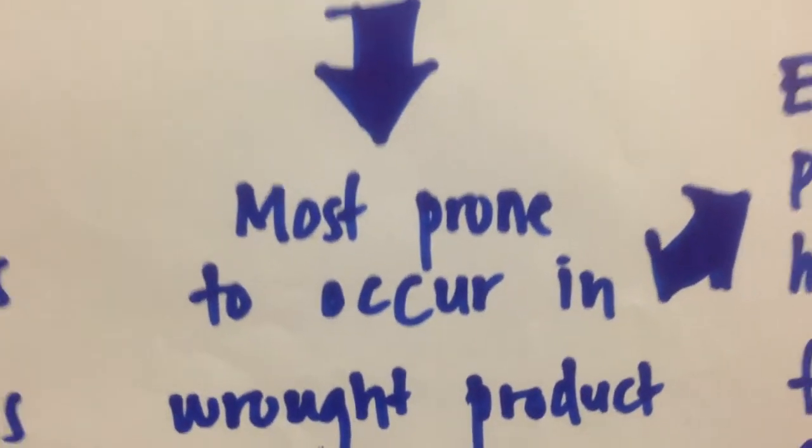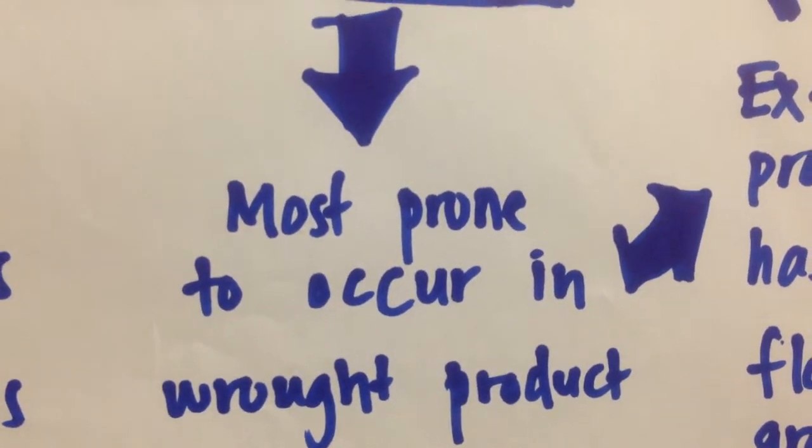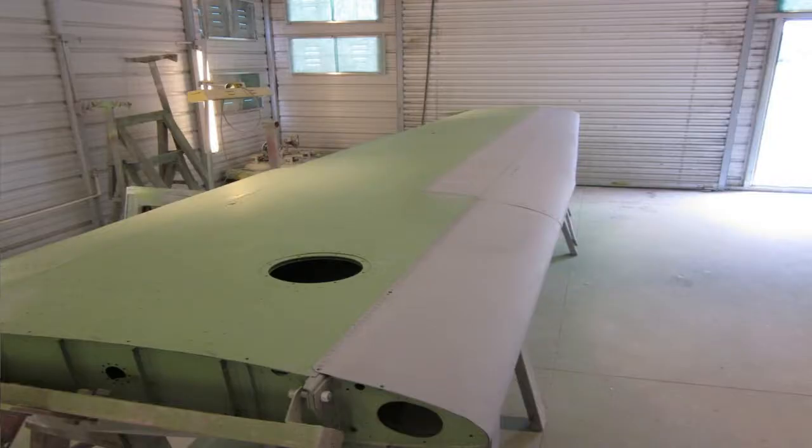Exfoliation corrosion is most prone to occur in wrought products. For aircraft, it will occur along aluminum grain boundaries in the fuselage, empenage, and wing skins of aircraft.